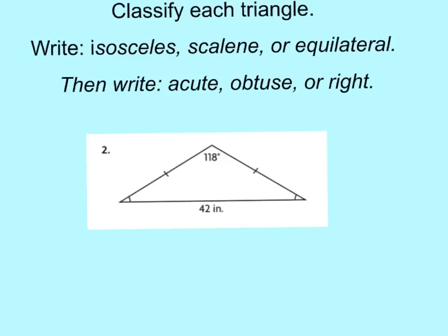Let's take a look at question number two. If we classify this triangle, we need to write isosceles, scalene, or equilateral, and then write acute, obtuse, or right. Go ahead and press pause now and write your answer. For number two, you should have said that it was an obtuse isosceles triangle, because it has one obtuse angle and two sides were congruent.